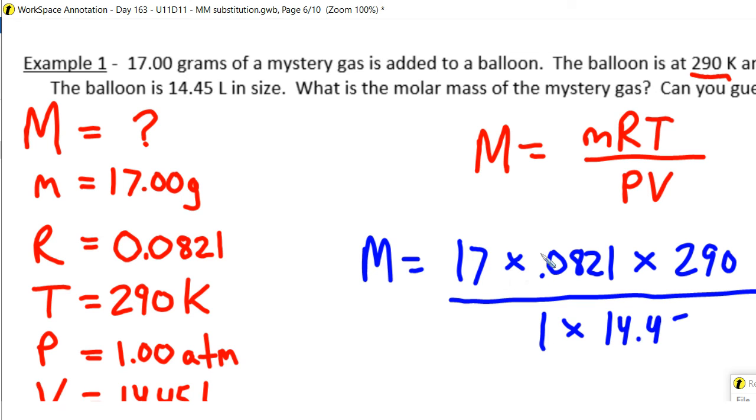Alright, so we're plugging all of our numbers. Now I don't have parentheses in my formula, but yeah, get a total for the top, get a total for your numerator, and get a total for your bottom, your denominator, and then divide the two. And when you do that,